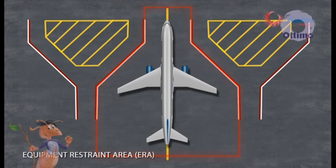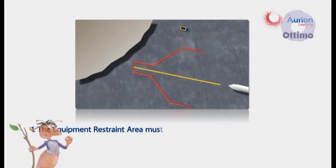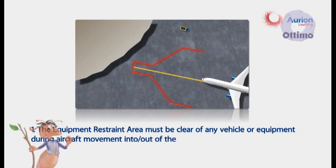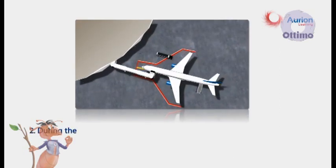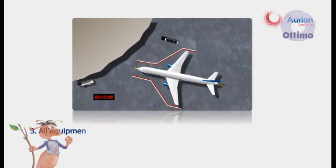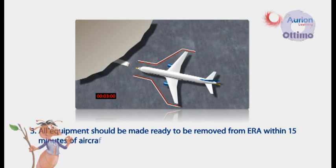The Equipment Restraint Area or ERA is an enclosed area on the aircraft parking bay defined by a continuous red line, within which no vehicles must be parked or driven immediately before and during the parking of aircraft. The equipment restraint area must be clear of any vehicle or equipment during aircraft movement into or out of the bay. During the servicing of the aircraft, all equipments are to keep within the area formed by the equipment restraint line. All equipment should be made ready to be removed from ERA within 15 minutes of aircraft departure.